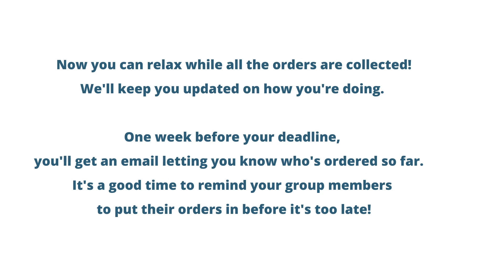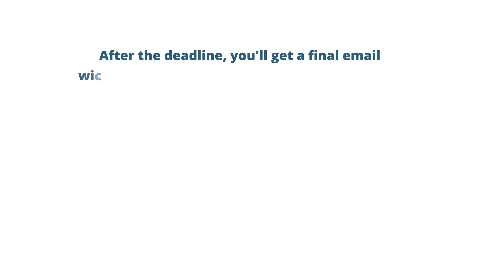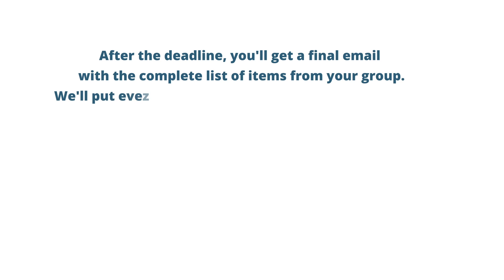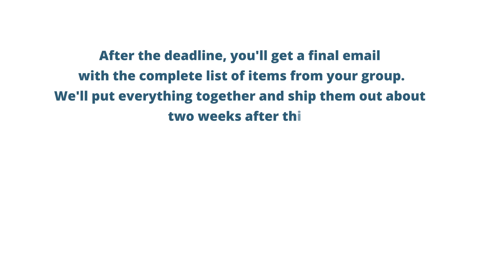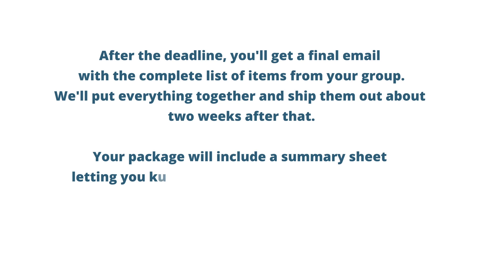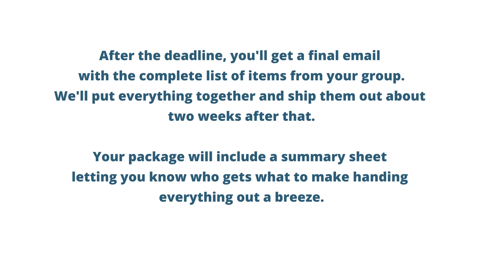Now you can relax while all the orders are collected. We'll keep you updated on how you're doing. One week before your deadline, you'll get an email letting you know who's ordered so far — it's a good time to remind your group members to put their orders in before it's too late. After the deadline, you'll get a final email with a complete list of items from your group. We'll put everything together and ship them out about two weeks after that. Your package will include a summary sheet letting you know who gets what, to make handing everything out a breeze.